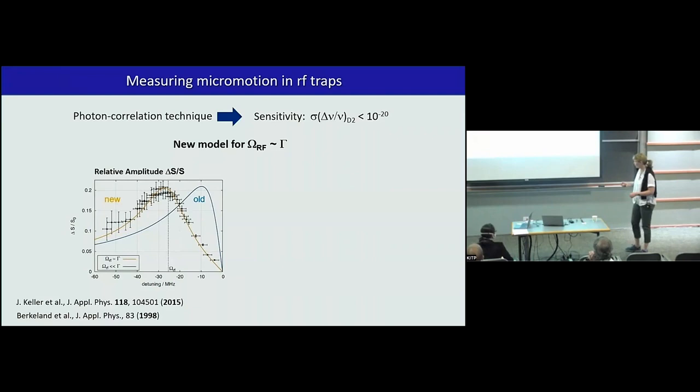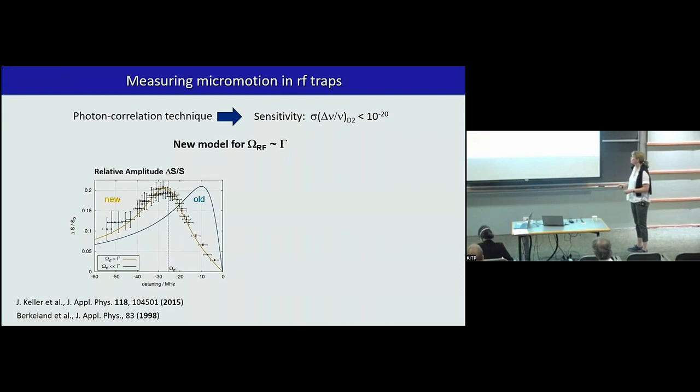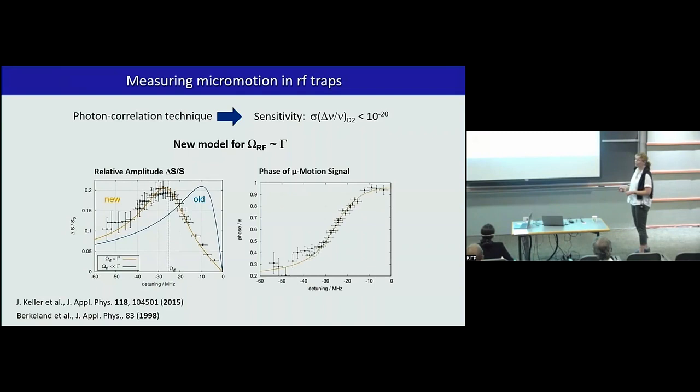We had to first come up with a new method, how to measure and benchmark micromotion, because we realized the old model from 1998 was unfortunately not working for any ion, except mercury, because you really have to consider the interference of the electric field, the coherence of the ions. We first worked on a new model to measure micromotion with photon correlation. Then we used this model, and we measured micromotion in such an extended Coulomb crystal over 400 micrometers.